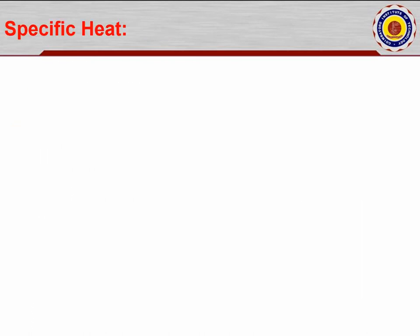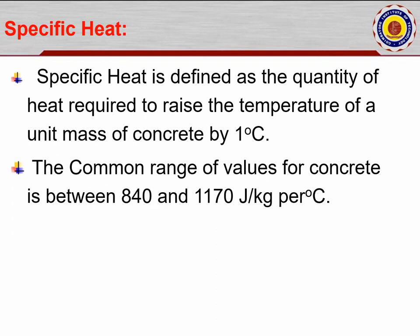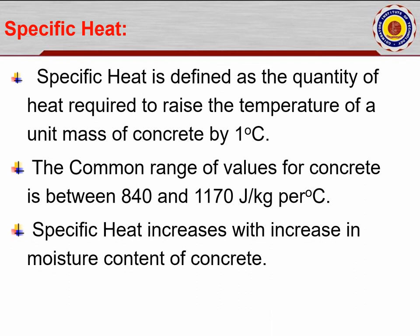Specific heat is defined as the quantity of heat required to raise the temperature of the unit mass of concrete by one degree centigrade. The common range of values for concrete is between 840 and 1170 joules per kg per degree centigrade — this is the normal minimum to maximum range for all types of concrete. Specific heat increases with increase in moisture content of the concrete.